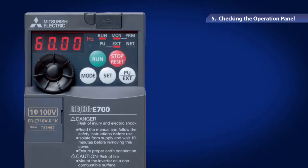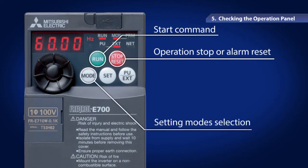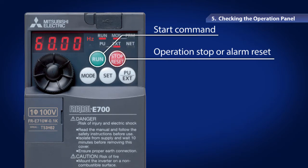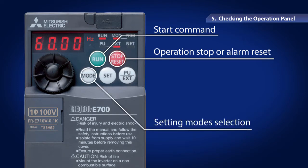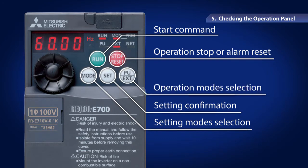Use the Run button for the start command input, the Stop Reset button for the operation stop or the alarm reset, and the Mode button for selection between the setting modes. The Set button can be used for confirming and saving each setting, and the PU EXT button for switching the operation modes.